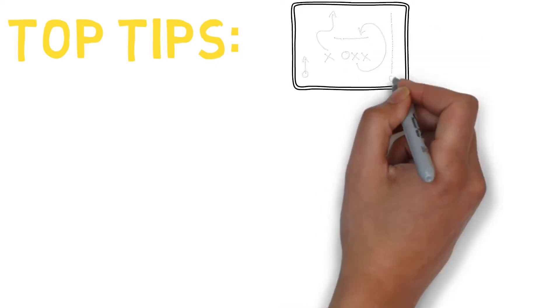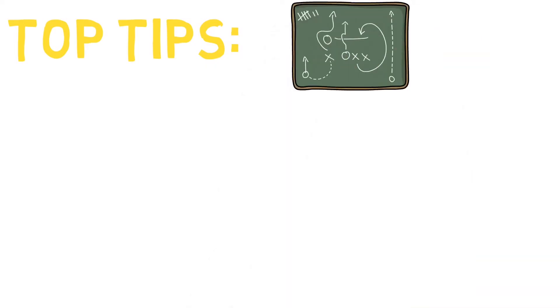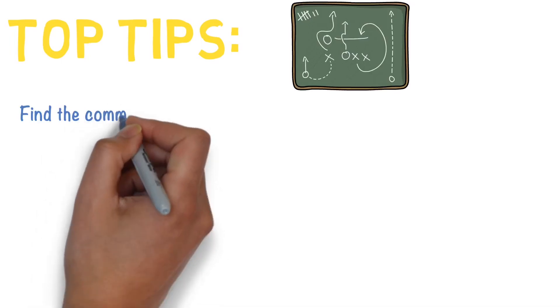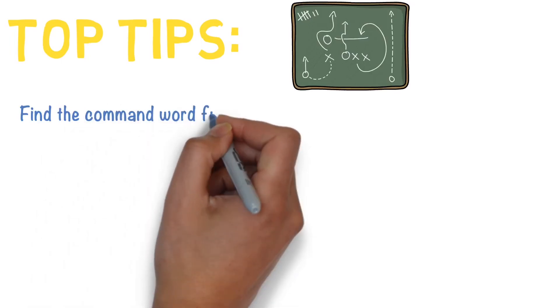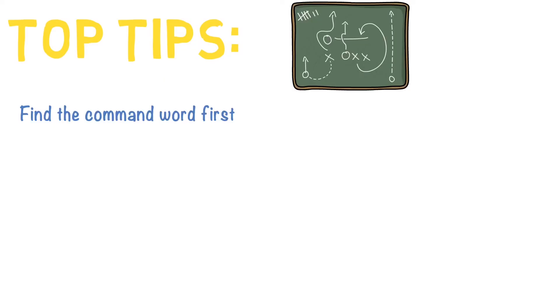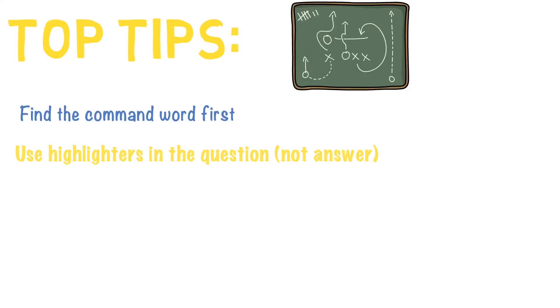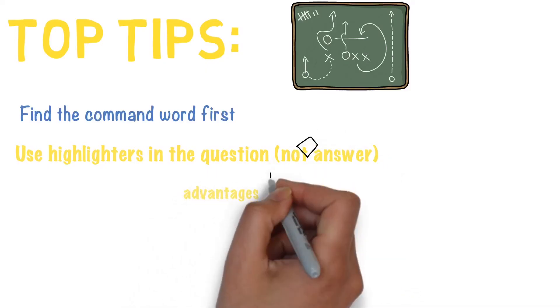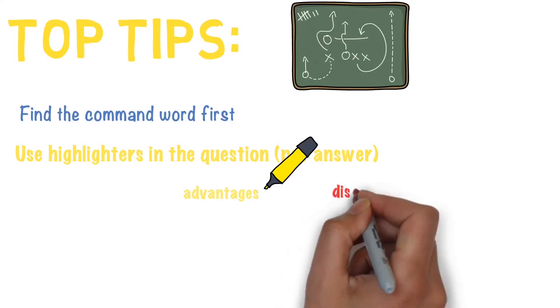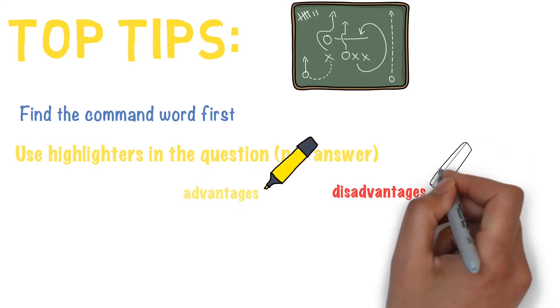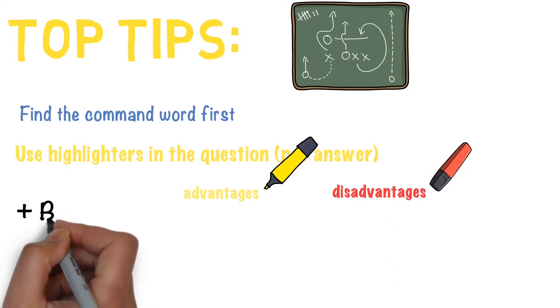So let's now look at the top tips that we have. Okay, so the first thing is when you get the question you've got to plan it out. Sometimes there's loads of text in these six mark questions. So find out what the command word is first, then skim back and you can use highlighters to highlight either pros and cons or advantages and disadvantages and use different colors to highlight what the advantages and the disadvantages are. But do not put color in your actual answer. You must only write in black pen.